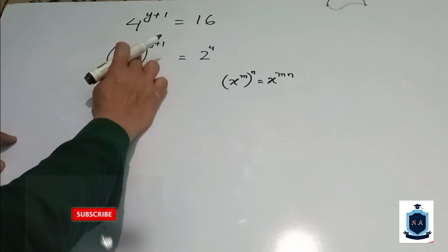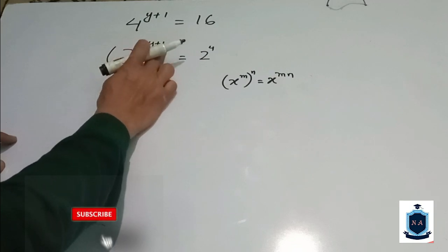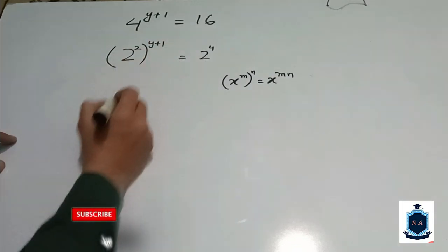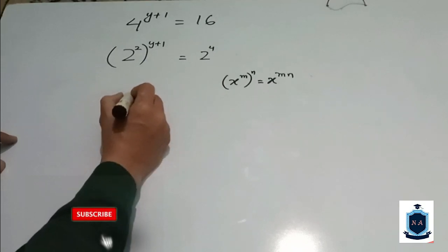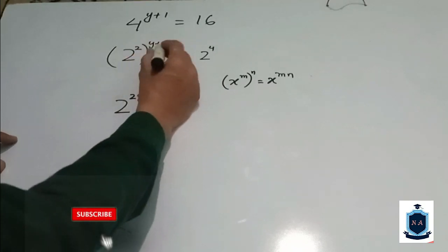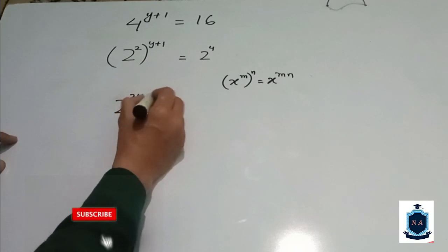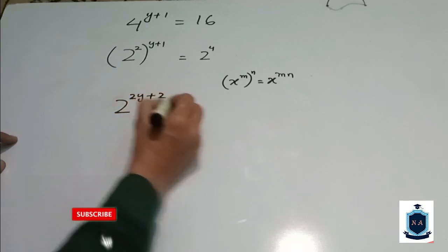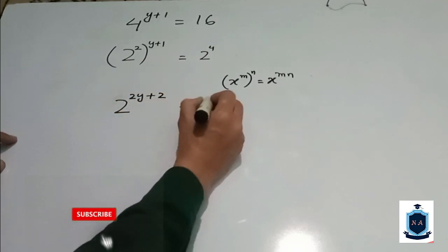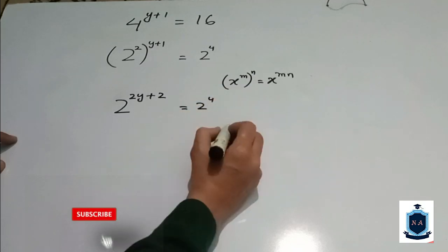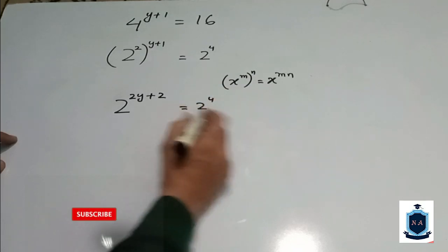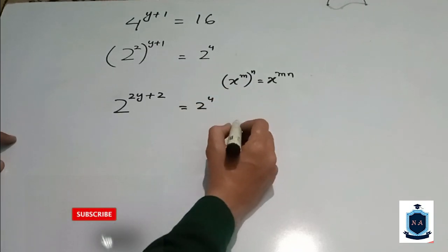Here you can see that 2 will multiply with y — it means 2y — and 2 will multiply with 1 — it means 2. So we have 2 power (2y plus 2) equals 2 power 4. By comparing the bases, they are the same.